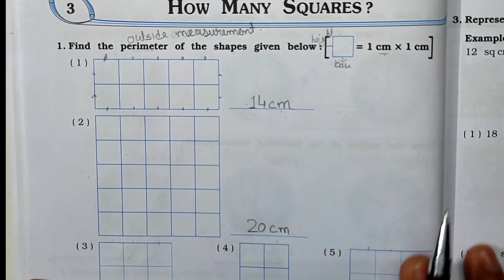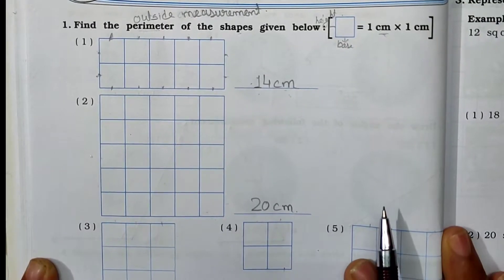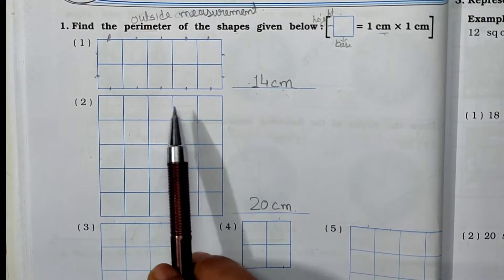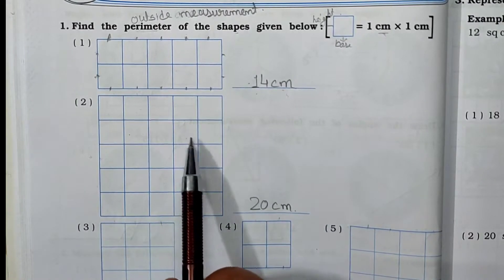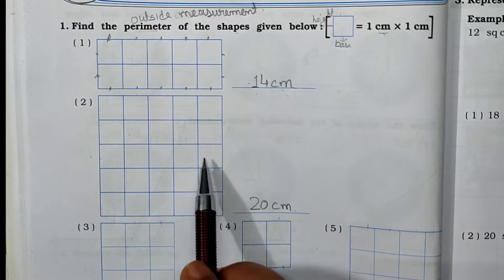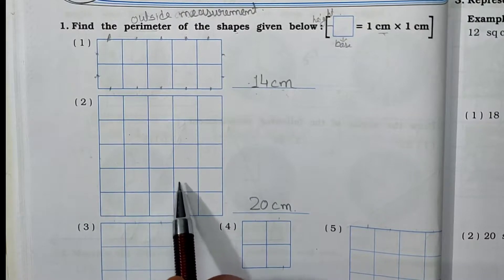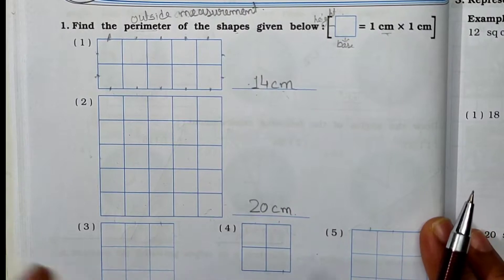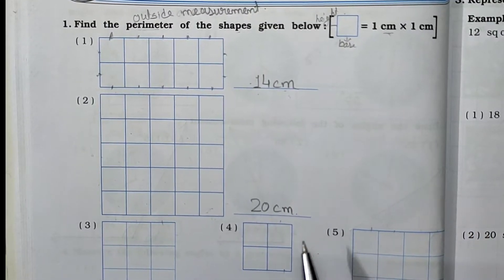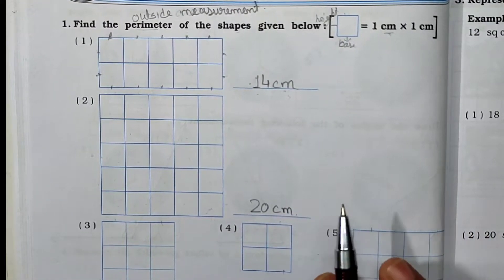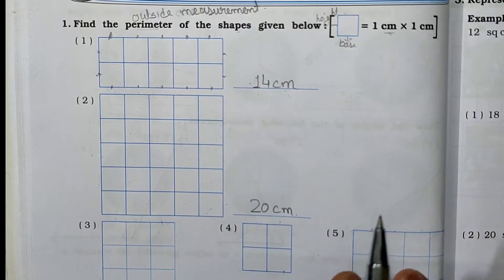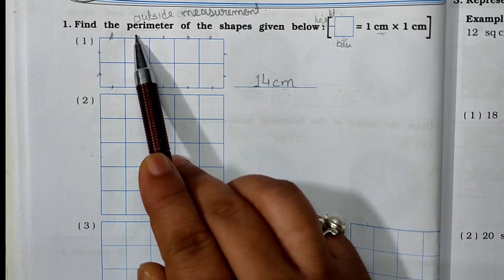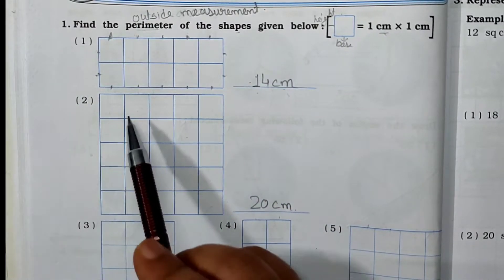Now see the second one. Counting inside gives 25, but if you write 25 centimeters as the answer, your answer is wrong. Why wrong? Because you have to find the perimeter — outside measurement. So counting the outside: 1 through 20. The perimeter of this shape is 20 centimeters.